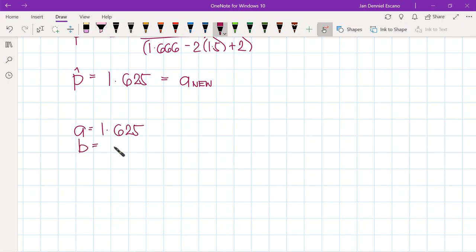Now b will be g of a, and that is equal to 1.615384615, and c which is equal to g of b, we get the answer 1.619047619. And we just repeat this until...